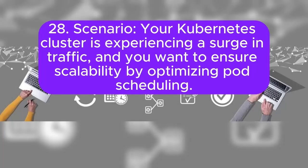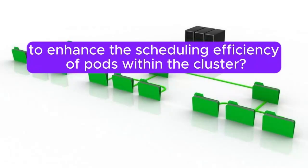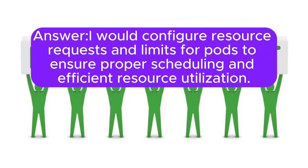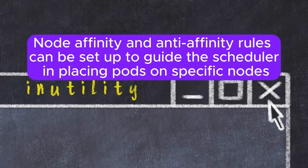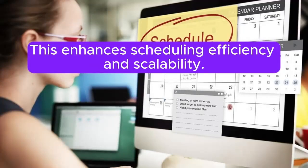Scenario 28: Your Kubernetes cluster is experiencing a surge in traffic and you want to ensure scalability by optimizing pod scheduling. How would you configure resource requests and limits, as well as node affinity and anti-affinity rules, to enhance the scheduling efficiency of pods within the cluster? Answer: I will configure resource requests and limits for pods to ensure proper scheduling and efficient resource utilization. Node affinity and anti-affinity rules can be set up to guide the scheduler in placing pods on specific nodes based on node characteristics or the presence of other pods. This enhances scheduling efficiency and scalability.